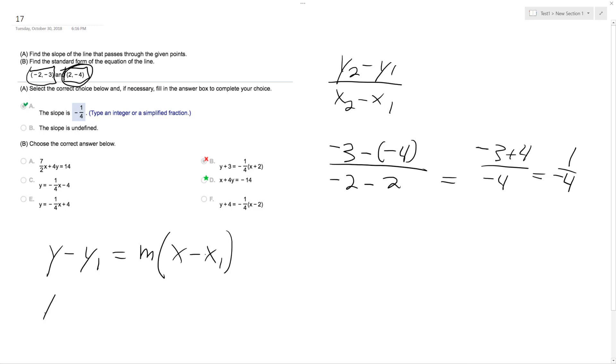So I'll pick the second point. What I get is y minus negative 4 equals negative 1 fourth times x minus 2.